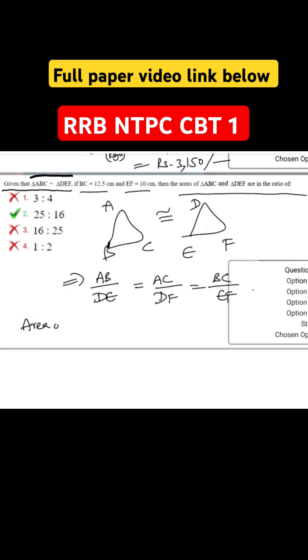Now area of triangle ABC divided by area of triangle DEF is equal to BC square by EF square.